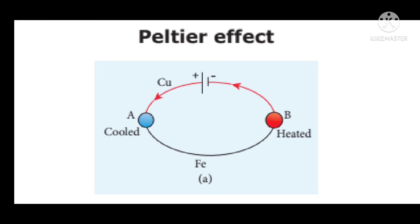So when current is passed, at junction A, heat is absorbed. That's why it becomes cooled. Whereas at junction B, heat is evolved or liberated. That's why it becomes heated. So this effect is known as Peltier Effect. Hope you would have understood. Let us continue with the next question.